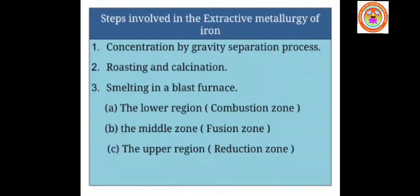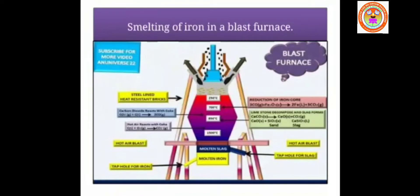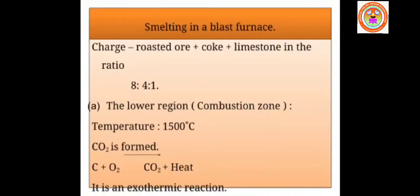The third step is smelting — a reduction process in which the metallic oxide is reduced to its metal, usually carried out in a blast furnace. The blast furnace has different zones: lower zone (combustion zone), middle zone (fusion zone), and upper zone (reduction zone). In smelting, a mixture called 'charge' is used — a mixture of roasted ore, coke, and limestone in the ratio 8:4:1.